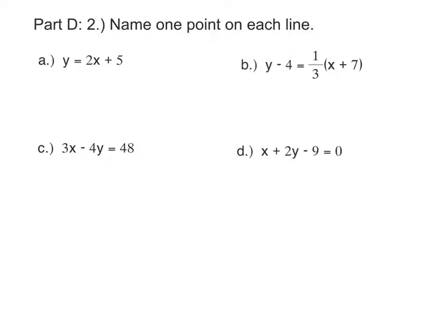And the first form, y equals 2x plus 5, that's slope-intercept form, meaning that 5 is the y-intercept.